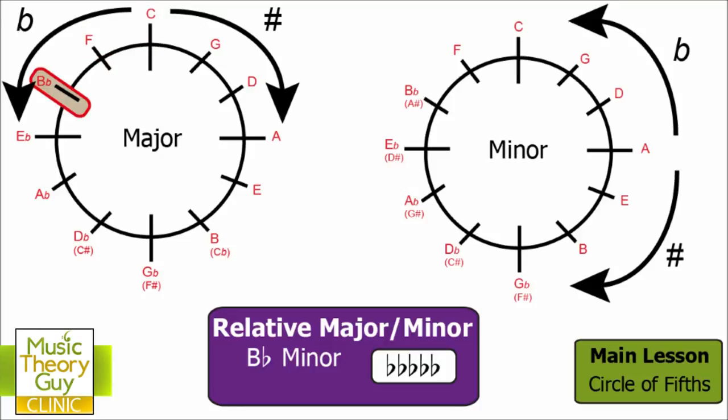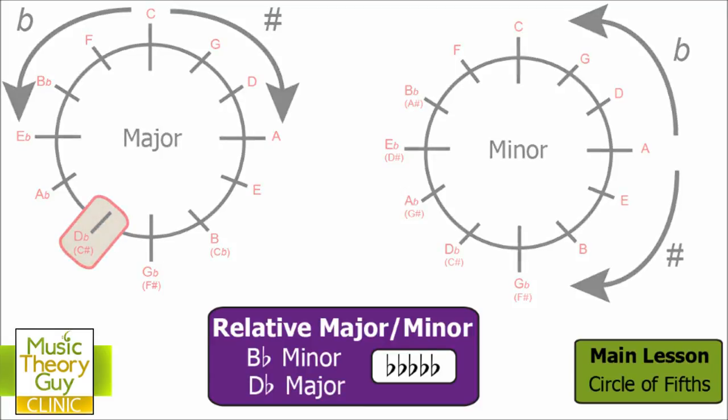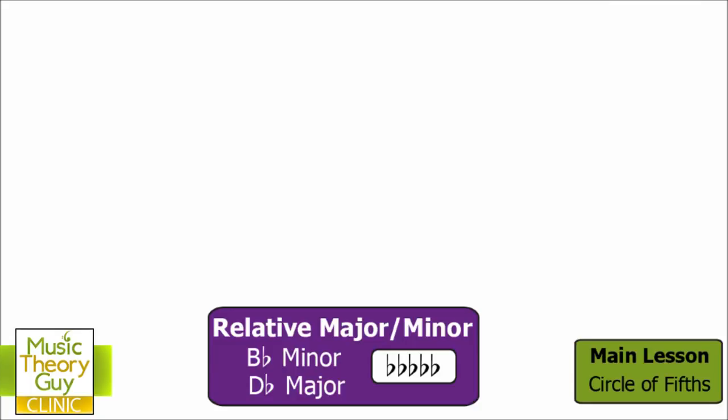3 to E flat, 4 to A flat, 5 to, is it D flat or C sharp? Well, remember, because our key signature has got flats in, it will only ever be called something flat. So we can dismiss the C sharp, and we can definitely say it's D flat. So we now know that D flat major is the relative major of B flat minor, because they both have five flats in their key signature.